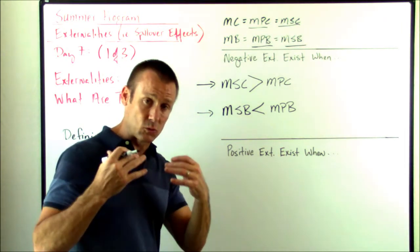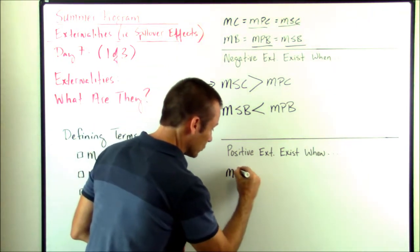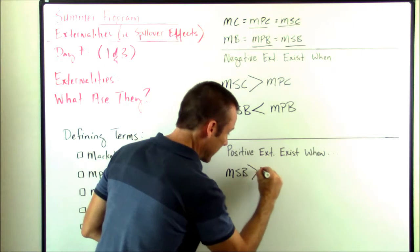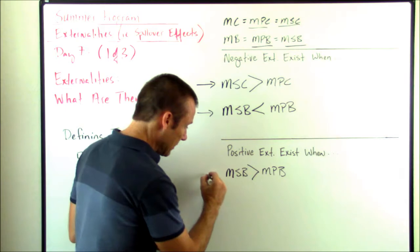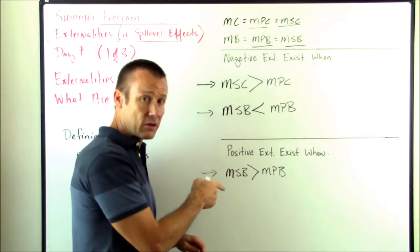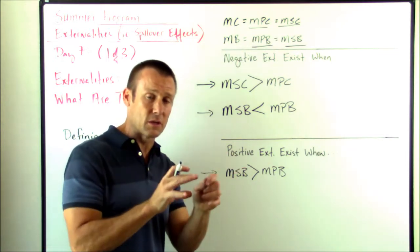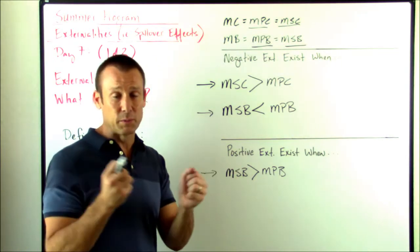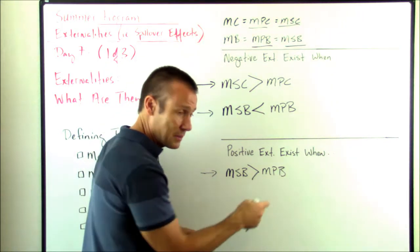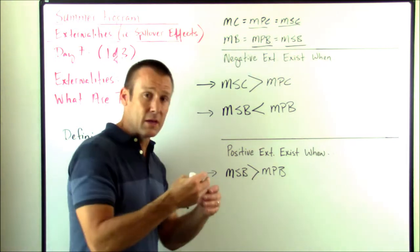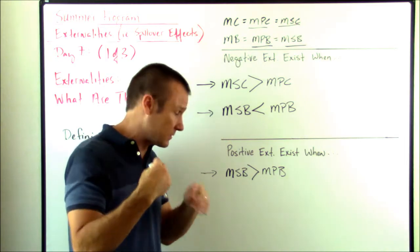Positive externalities exist when the marginal social benefit is greater than the marginal private benefit — that's a positive externality from consumption. When this happens, the consumption of the good is creating positive spillover effects, benefits to others. The MSB takes into account MPB, but it's greater than MPB because there are additional benefits that third parties are receiving.